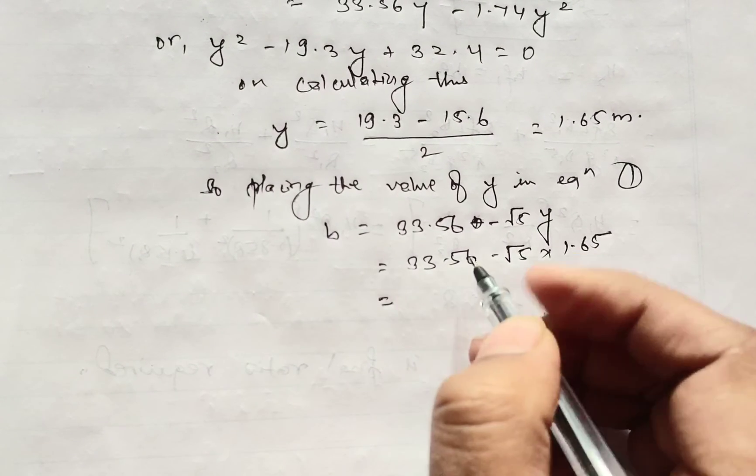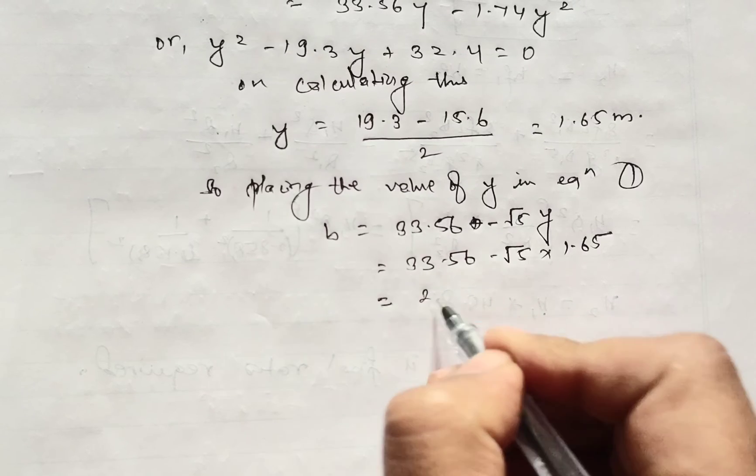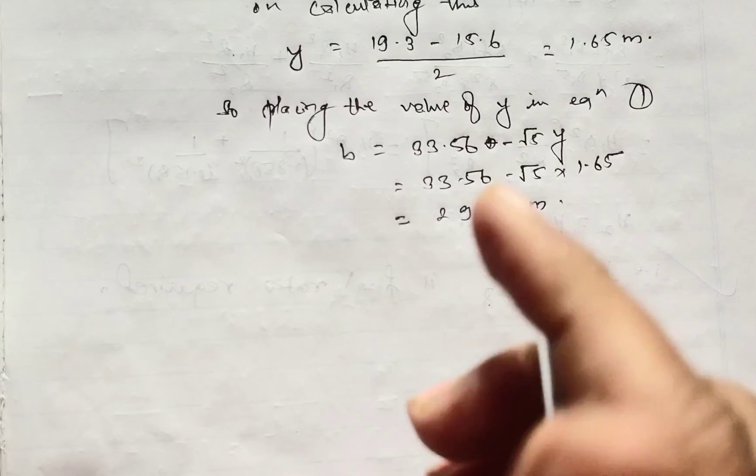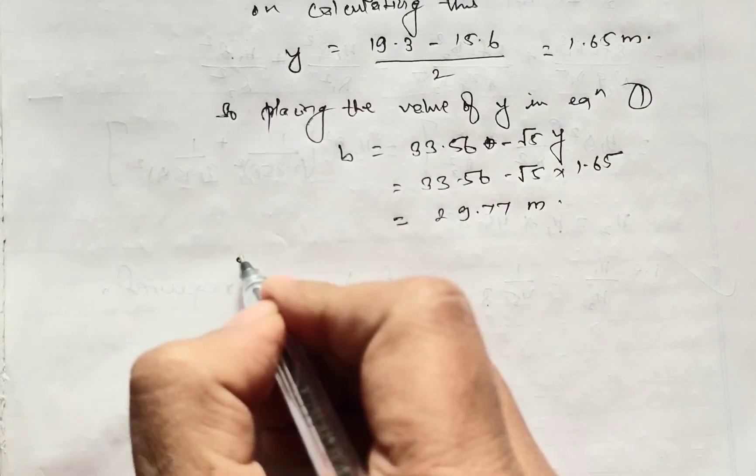On solving this, the result will be 29.77 meter. This is the width of trapezoidal channel. So after all this, we will calculate the slope of trapezoidal channel.